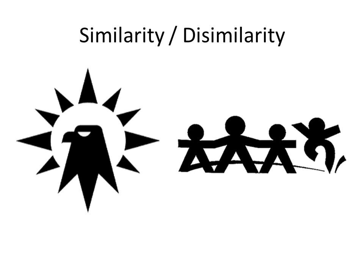When similarity occurs, an object can be emphasized if it is dissimilar to the others. This is called anomaly. The figure on the far right becomes a focal point because it is dissimilar to other shapes.